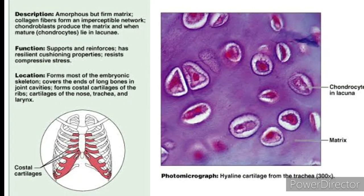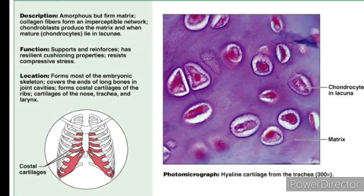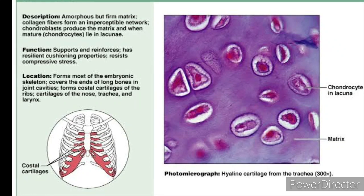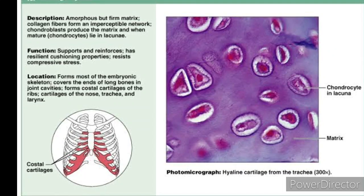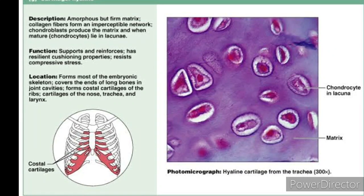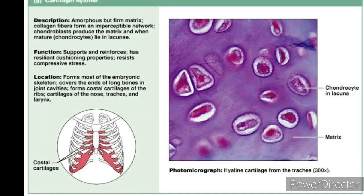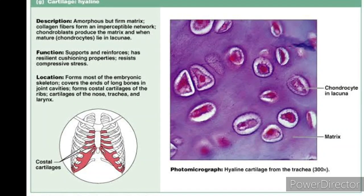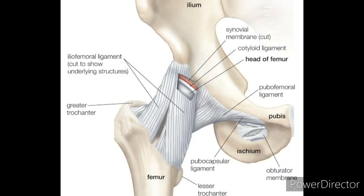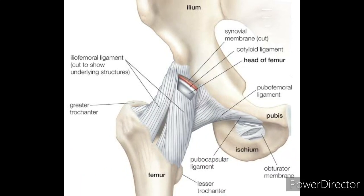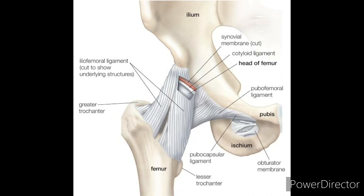Cartilage is also a tissue present in some animals as a skeletal system. In some animals like sharks and fishes, the entire skeletal system is made up of cartilage only. Ligaments are another type of connective tissue that connects bones at the joints and holds them into position. Ligaments contain a protein called collagen.